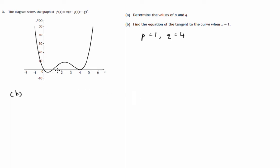Find the equation of the tangent to the curve when x equals 1. So that would be the equation of this line that I'm sketching in there. So we know that the curve has a formula x times x minus 1 times x minus 4 squared.